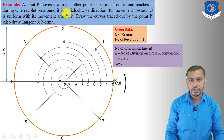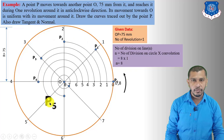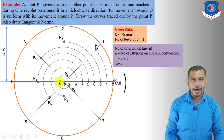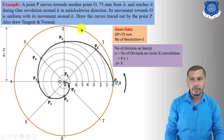Mark the intersection points of the arcs with the divisions: P0, P1, P2, P3, P4, P5, P6, P7, and P8 at the center. Now draw the freehand curve passing through these points — this will be the Archimedean spiral in the anticlockwise direction.